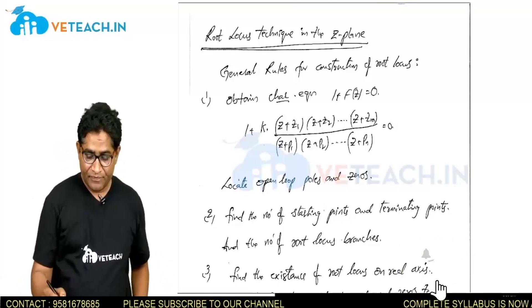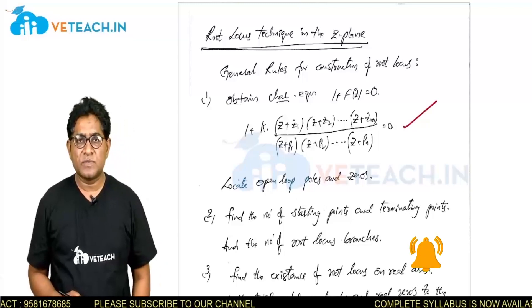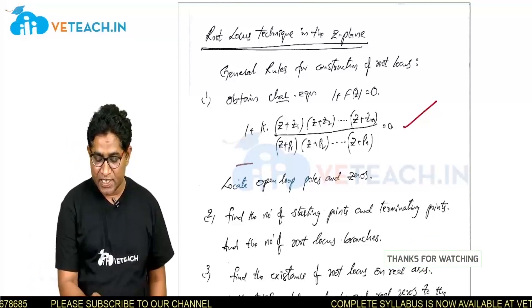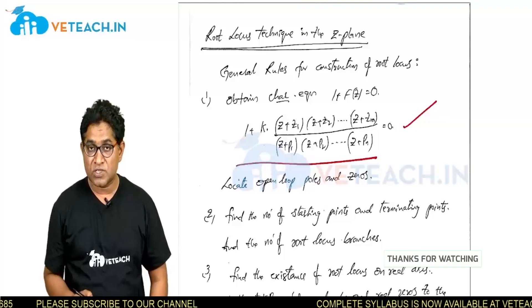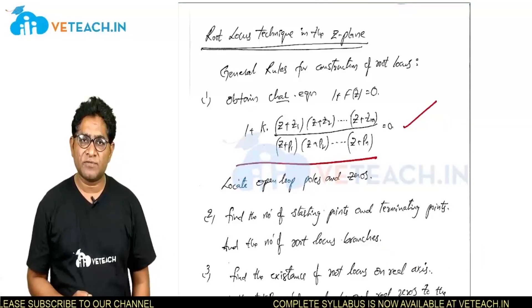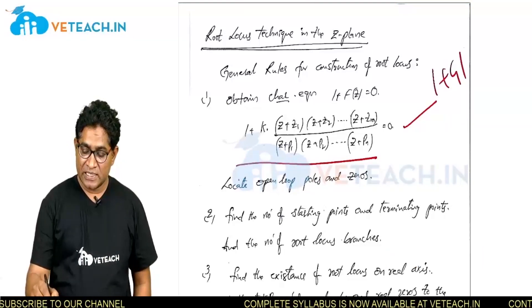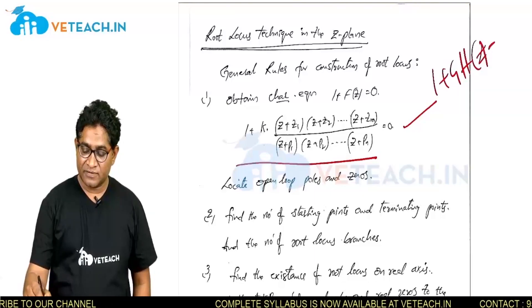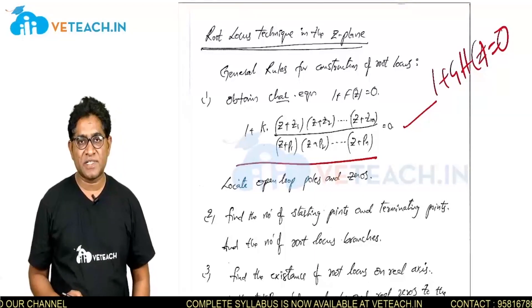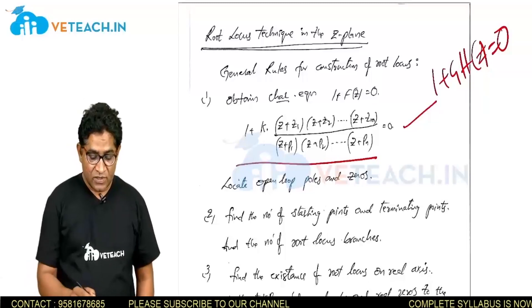Consider an open loop system whose characteristic equation is 1 plus k times the open loop transfer function, 1 plus GH(z) = 0. This is your characteristic equation.